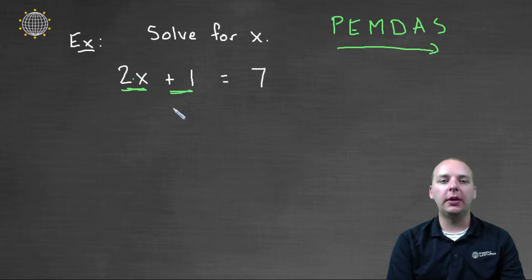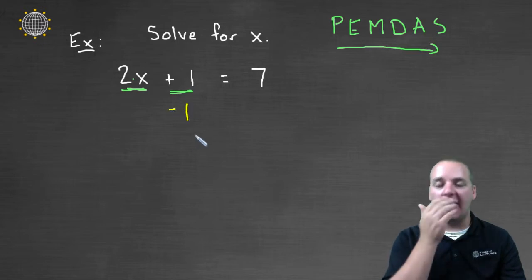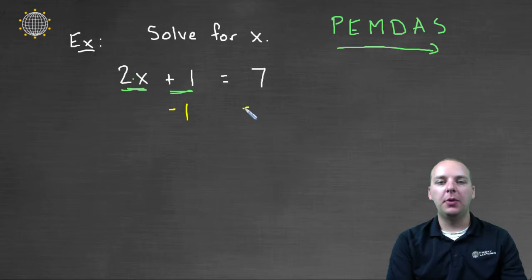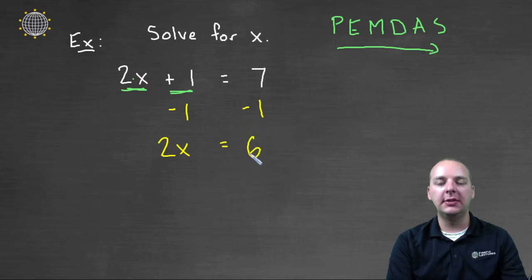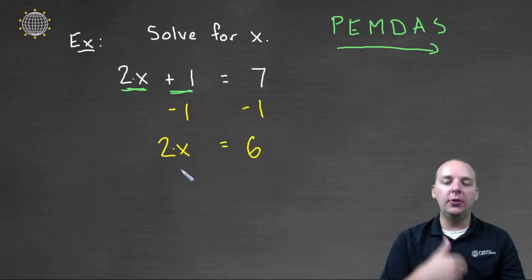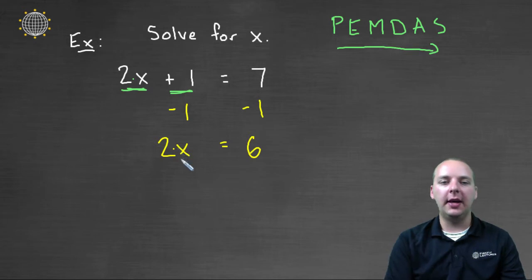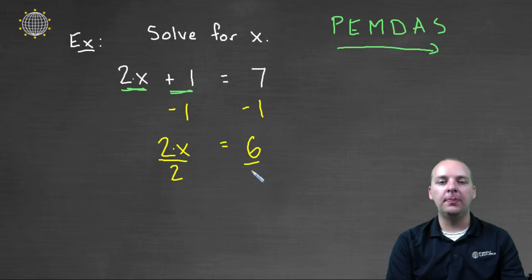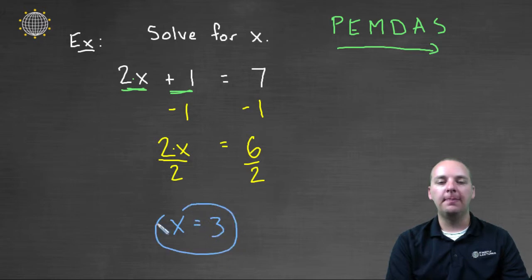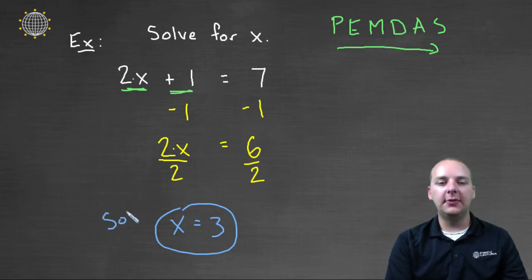So how do we get rid of a plus one? We subtract one — not just from the left-hand side, but also from the right-hand side. That gives us two x equals seven minus one, which is six. Then we undo the first operation done to x, which is times two, by dividing both the left-hand side and the right-hand side by two. That gives us x equals three. We can check: two times three is six, and six plus one makes seven. So this is in fact the solution.